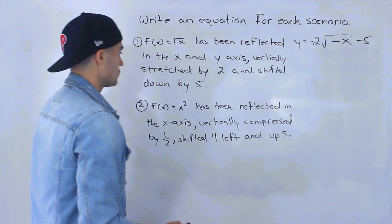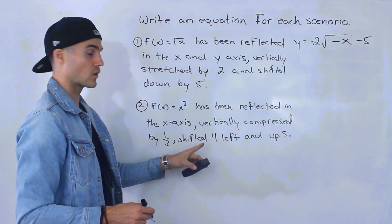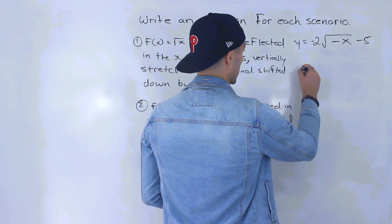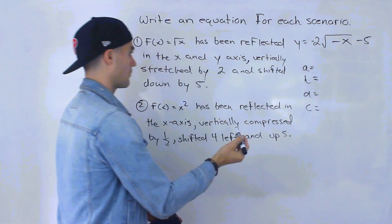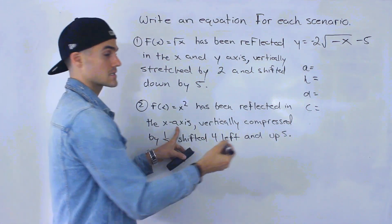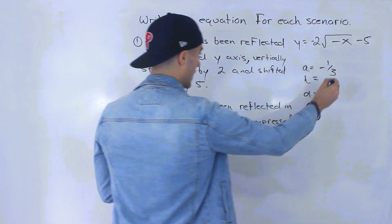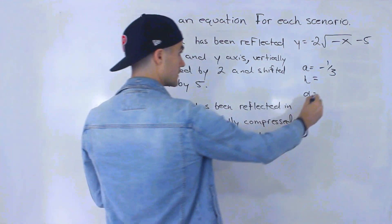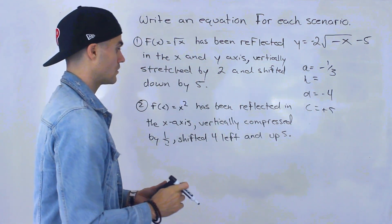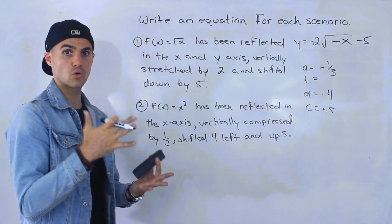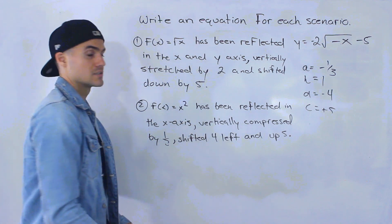Number two: x² has been reflected in the x-axis, vertically compressed by 1/3, shifted 4 left, and then up 5. Writing out the transformation values: reflected in the x-axis means a negative a value; vertically compressed by 1/3 is also the a value; shifted 4 to the left means d equals negative 4; and up 5 means c equals positive 5. Nothing is mentioned about a reflection in the y-axis or horizontal compression or stretch, so the k value is just 1.